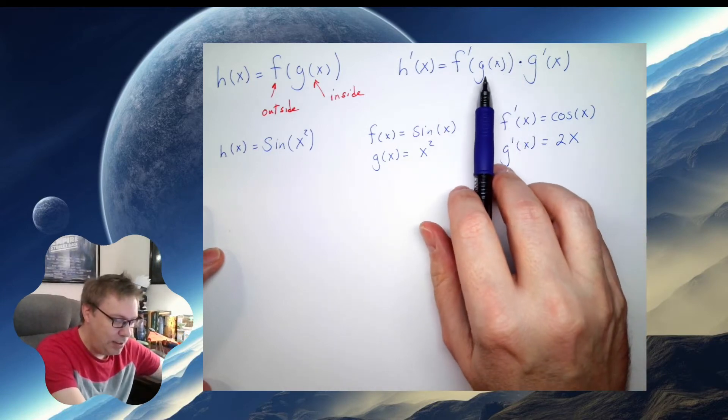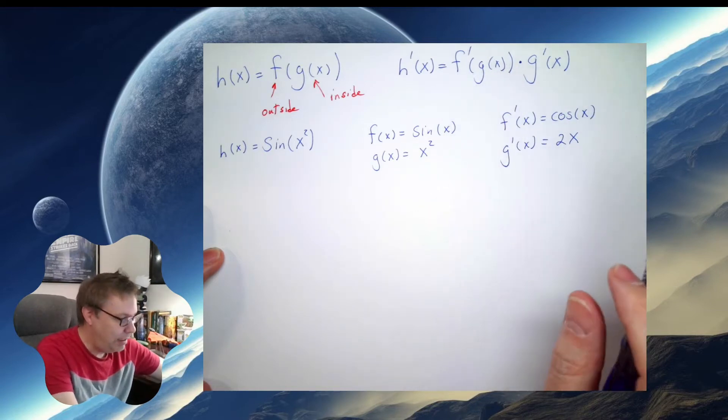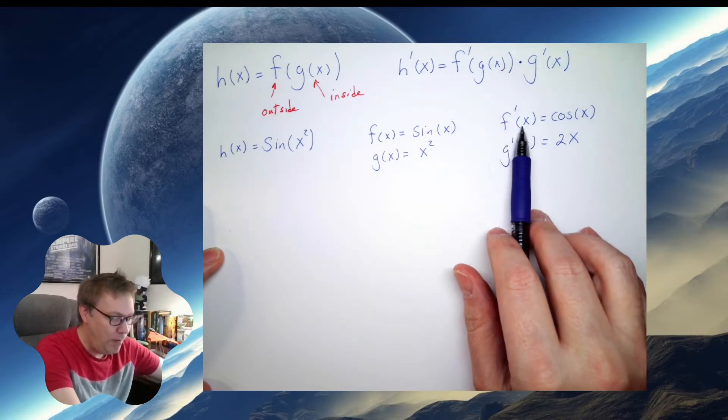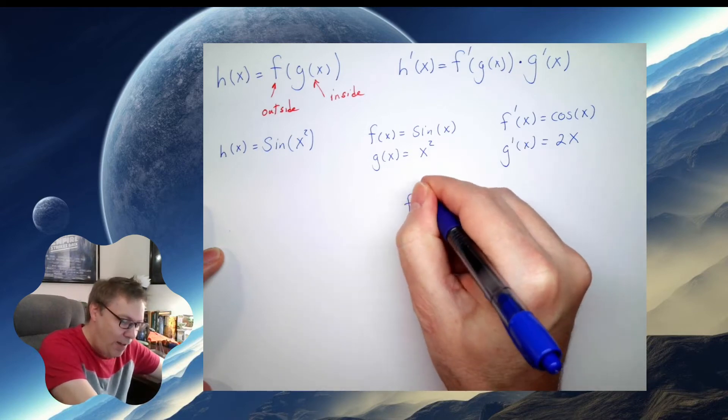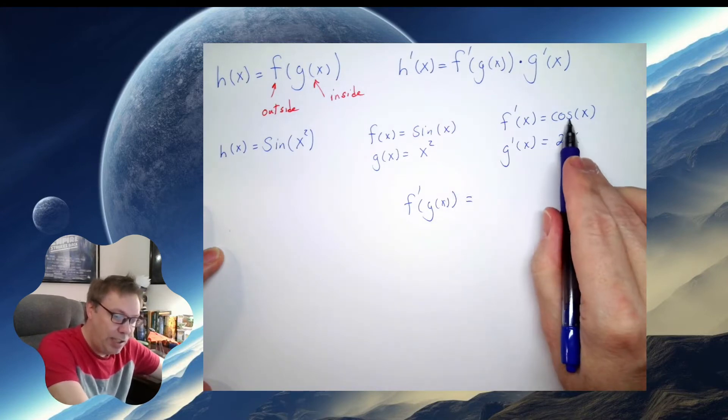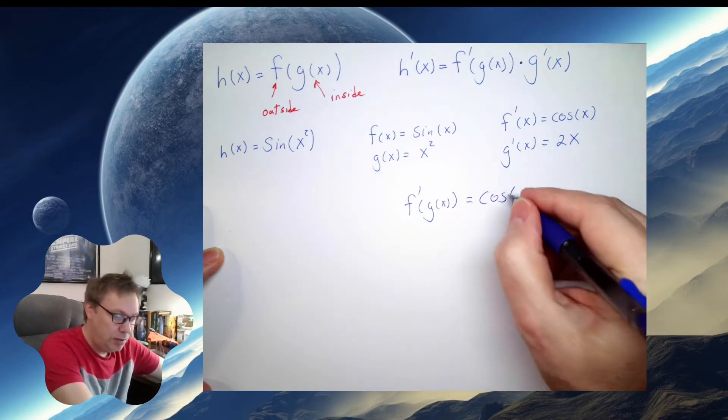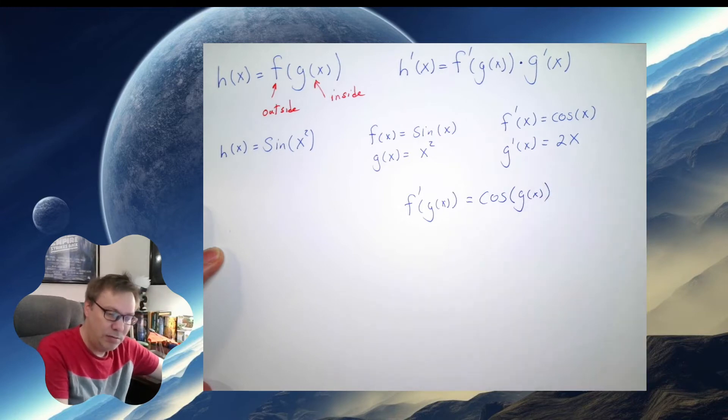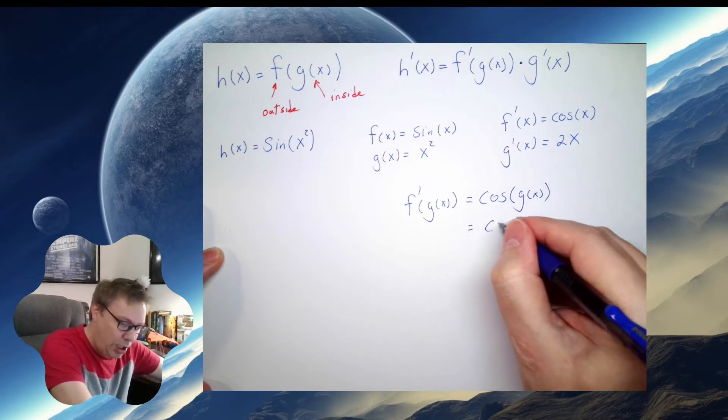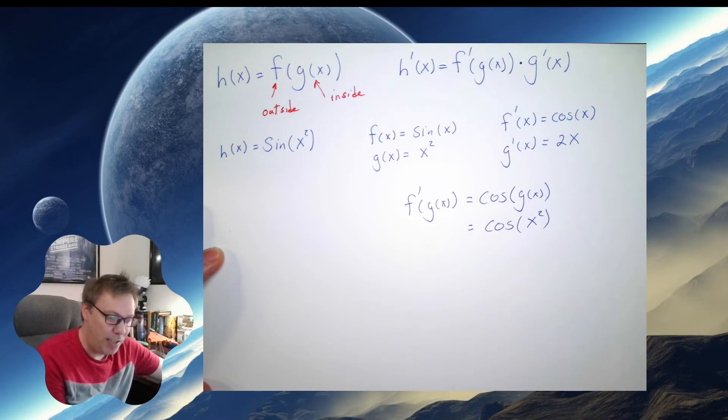So what does all this mean? It says f prime of g of x. It does not say f prime of x. So what is f prime of g of x? Well, I know f prime of x is cosine of x. So this is going to be cosine of g of x, which looks like cosine of x squared.